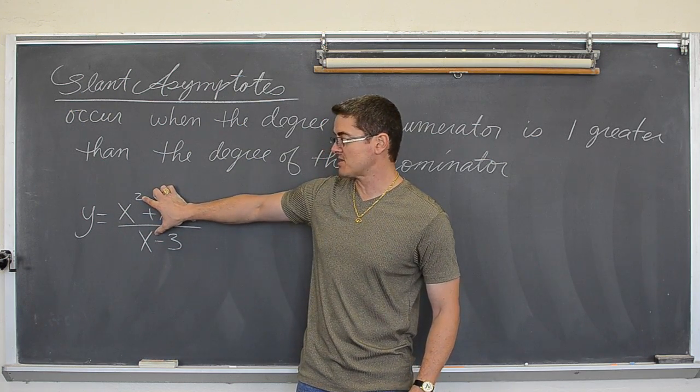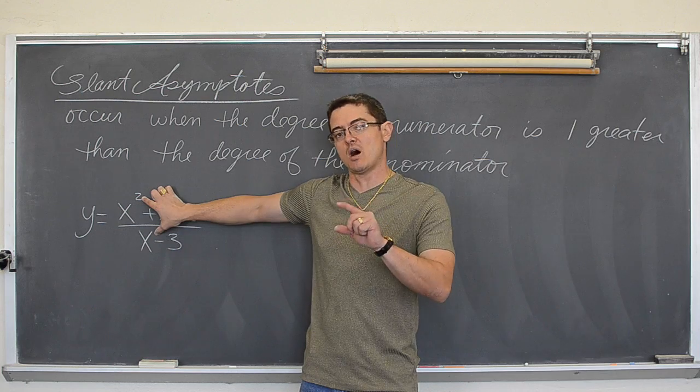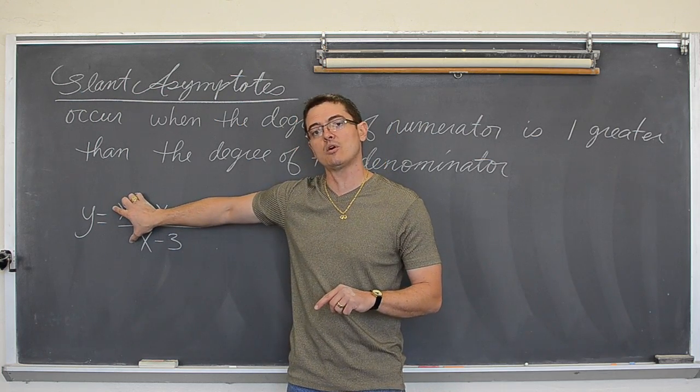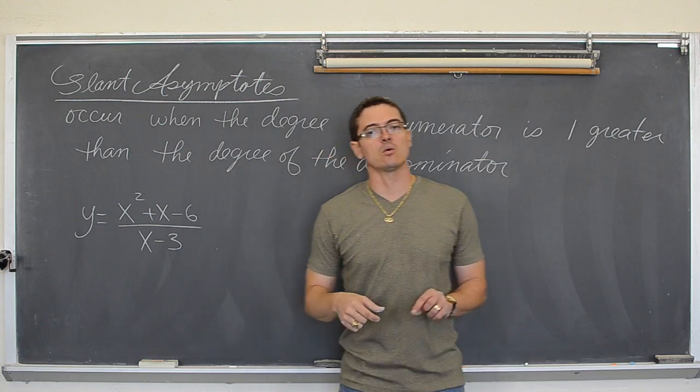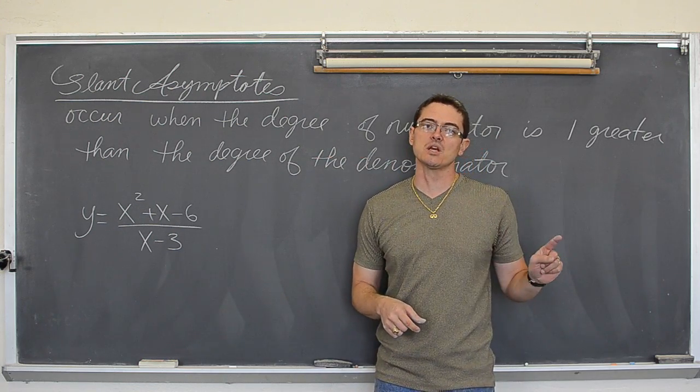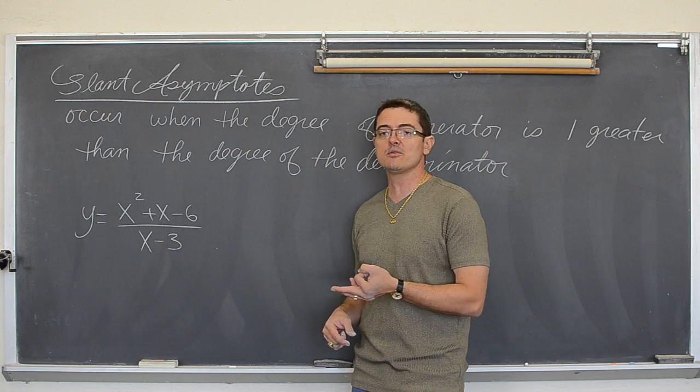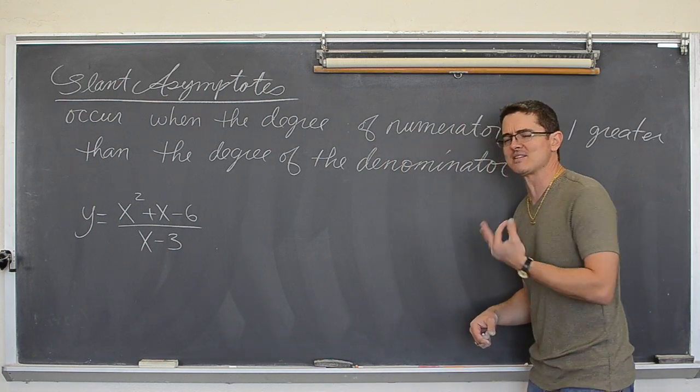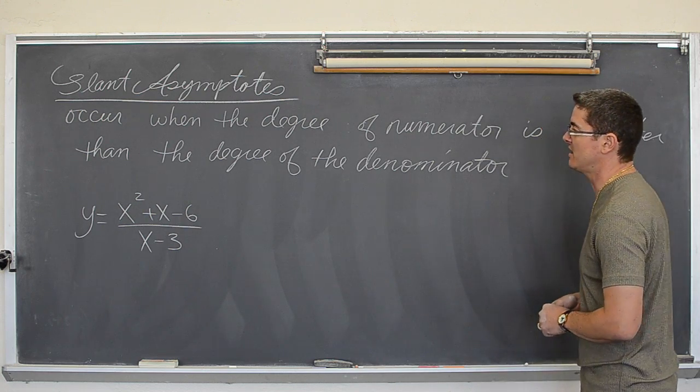If the degree on top is the same as the degree on the bottom, then the horizontal asymptote will be y equals whatever the leading coefficients are. And if the bottom degree is larger, then the horizontal asymptote is always y equals zero. So three basic rules for the horizontal asymptotes. In my video though I did prove how that actually works or is true with the idea of limits as x approaches infinity.